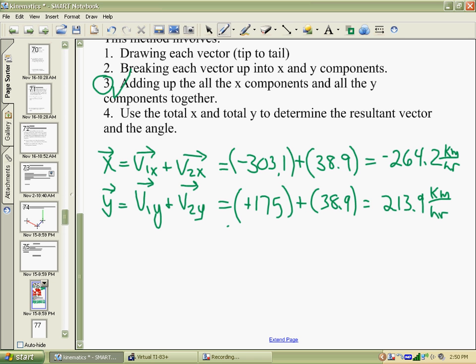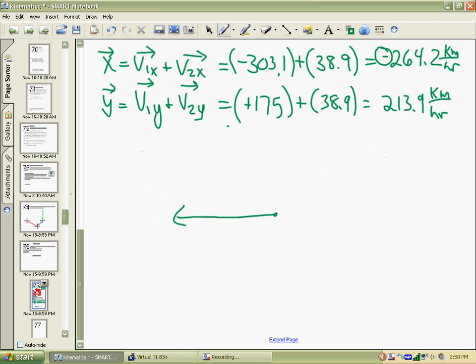Add the components together, and you're ready to move on to step four, which is to use these two vectors to determine the overall resultant vector. x is in the negative direction, which was west. So from some starting point, I go west 264.2 kilometers per hour. The second vector was positive 213, so we go north 213.9 kilometers per hour. And your resultant goes from the beginning of the first to the end of the second.